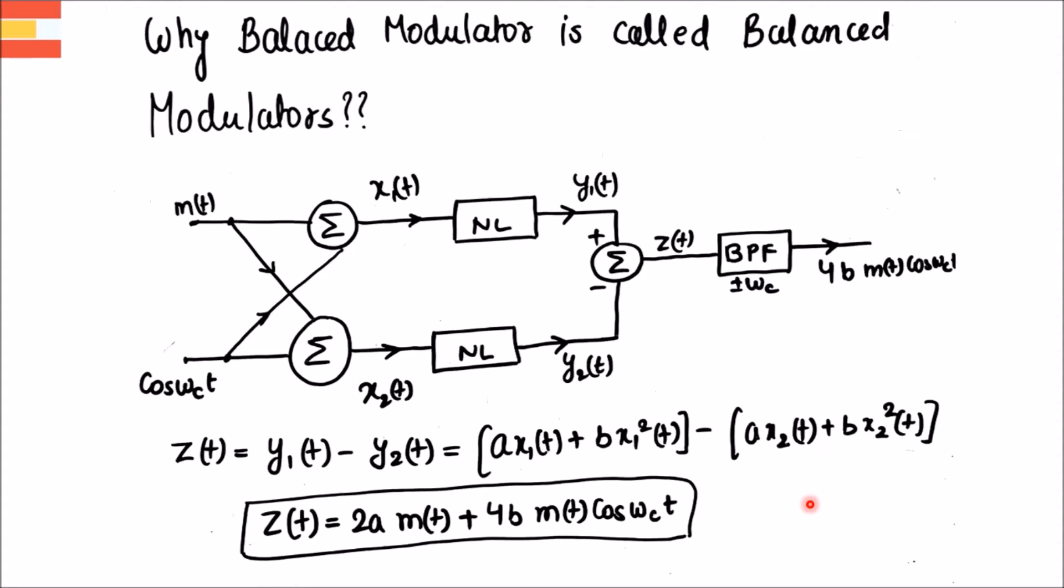Now let's discuss why balanced modulator is called balanced modulator. Let's take a typical block diagram of DSBSC modulator, that is double sideband suppressed carrier modulator, in which you can see there are two inputs: m(t) which is a message signal and cos ωc(t) that is a carrier signal.